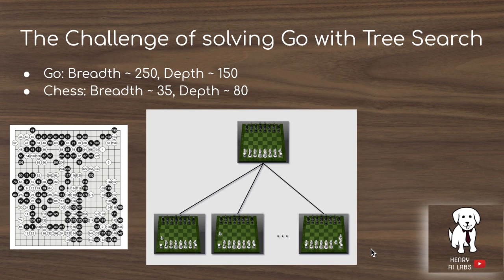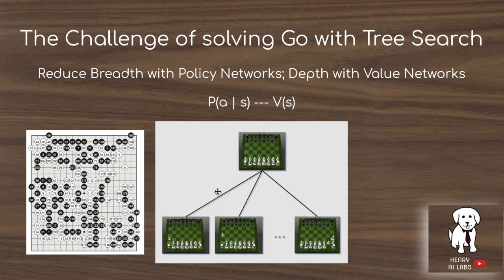Behind AlphaGo is the Monte Carlo tree search. Many game-playing AI systems use tree searches starting from a position, simulating all possible actions to construct a tree and make promising moves. The problem with Go and chess is their high branching factor and long game depth. So policy networks are used to reduce breadth — sampling and exploring actions likely taken by the policy — and value networks truncate depth, estimating how good a state already is via a regression model predicting winning probability.